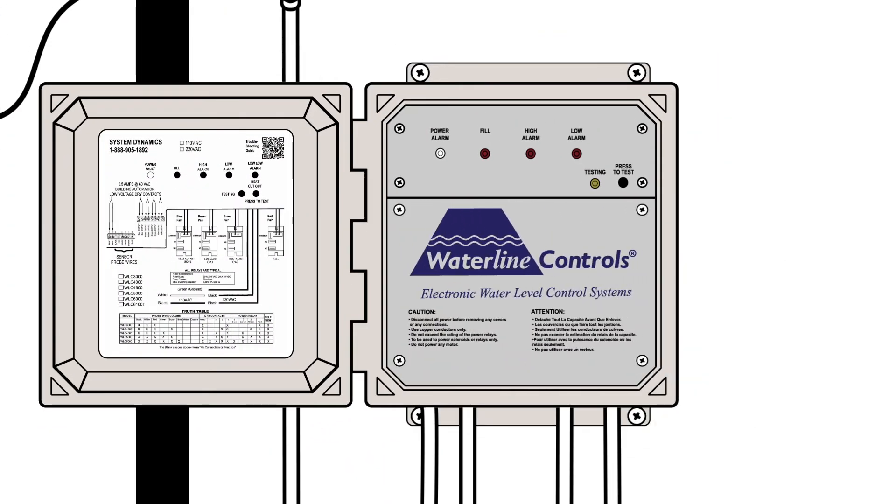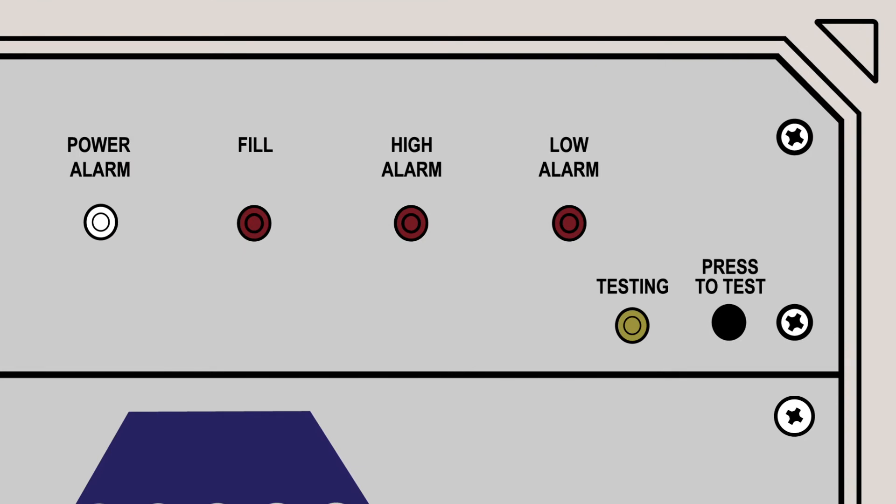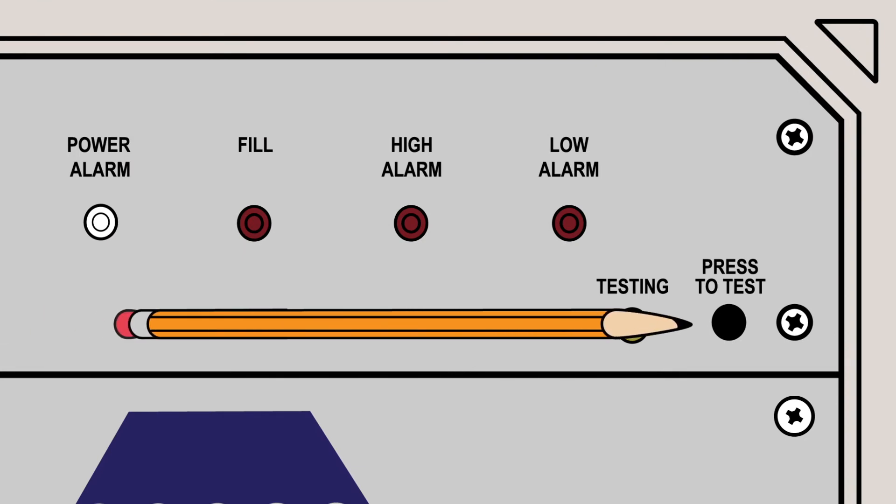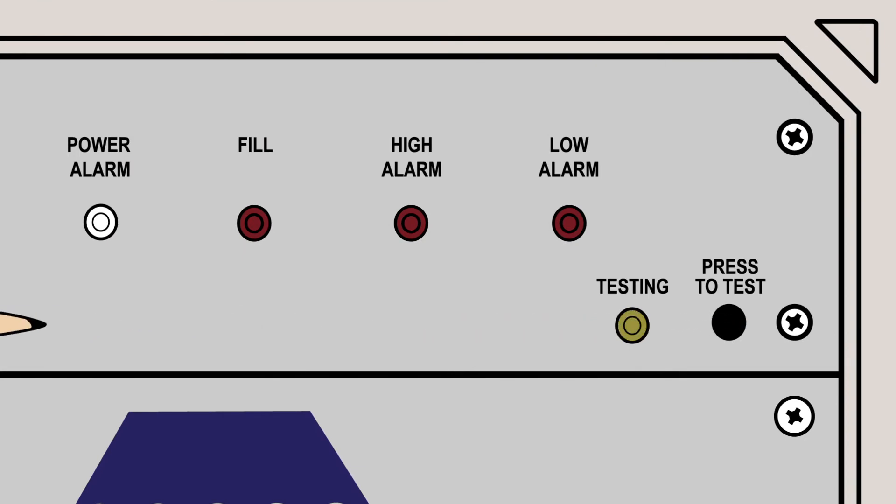To test your waterline control system, press the press to test push button using the tip of a pencil or pen. The yellow testing LED turns on and remains on during the test. Each switch will turn on the LED, the BMS connection, and the high voltage respective relay. Once testing is completed, the power alarm LED will flash five times, turn green, and the yellow test light turns off.